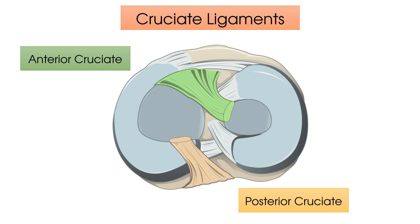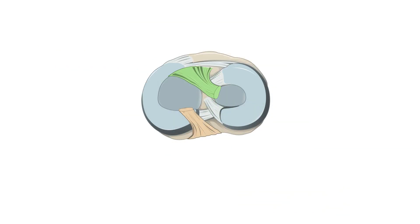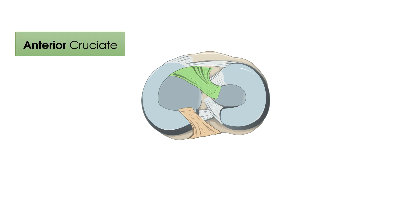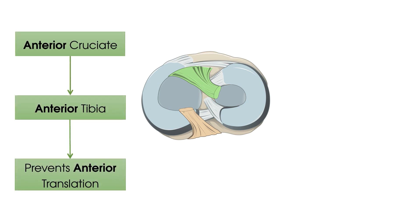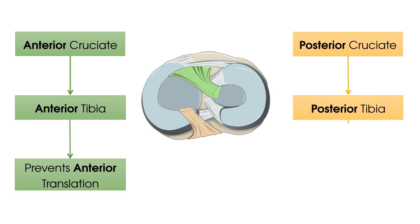Now in terms of the function of these ligaments, you may have heard us in our quickfire Q&A of the knee joint talk about the three anteriors. The anterior cruciate ligament inserts into the anterior surface of the tibia and prevents anterior translation of the tibia in relation to the femur. The exact opposite is true for the posterior cruciate ligament.